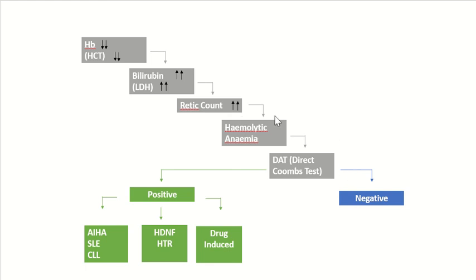First of all, we will do the Coombs test to exclude autoimmune hemolytic anemia. If it is negative, then we will investigate for other hemolytic anemias. If it is positive, then we will say it is autoimmune hemolytic anemia.